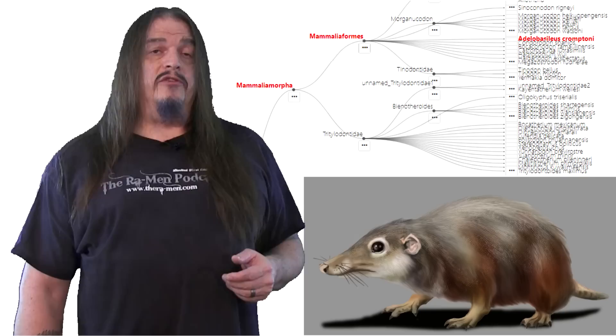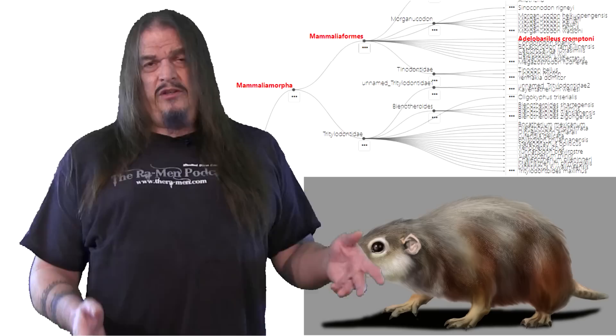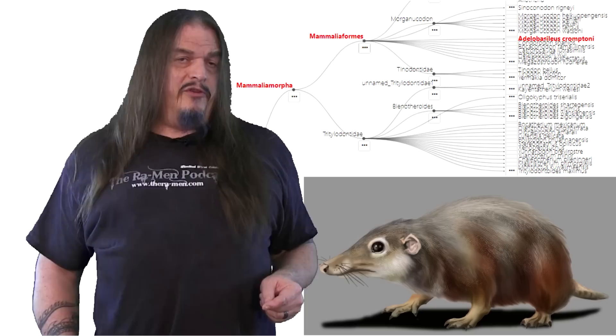Looking back at our own tree, we see quite a few shrew-like mammalian morphs. One of particular interest here is Adelabaselius, sometimes called the oldest mammal. It's not quite a mammal yet, but it's almost there.